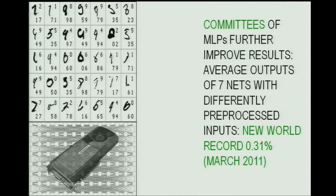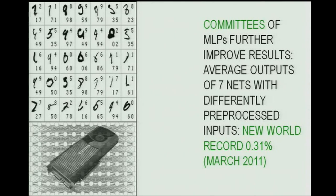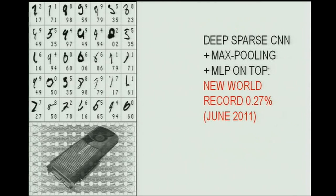You can further improve this result by taking not just one deep network but seven or ten, each slightly differently initialized and with slightly different pre-processing. You get different experts automatically as a byproduct, and then you do a democratic committee which takes the average of all these predictions. The result is better than any individual network, and this led to a new world record on the same dataset: 0.31%.